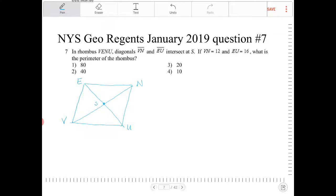One of the properties of a rhombus regarding their diagonals, the diagonals are perpendicular bisectors of one another. So they're telling us that VN is equal to 12, so therefore VS must equal 6, and SN must equal 6.